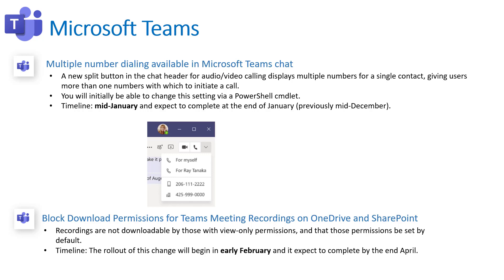We announced last month that Teams meeting recordings are moving away from Stream and into personal users' OneDrive — for one-on-one chats — or into the SharePoint library associated with a particular Teams channel where a recording took place. They are now extending security permissions to replicate what's available in OneDrive and SharePoint into stream recordings. At the fundamental level, it will prevent people from downloading recordings locally if they only have view-only permissions. I'll have documentation linked below covering all these permission scenarios. This begins in early February and goes through end of April.